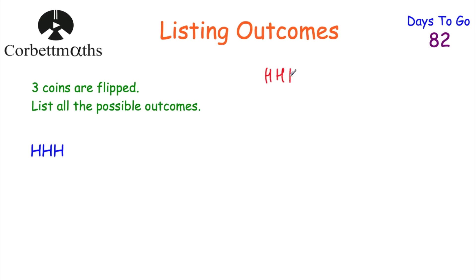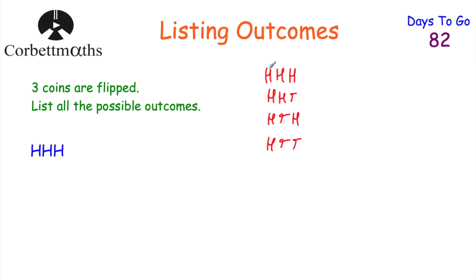So we've got head, head, head. Keeping the first coin as heads, the other possible outcomes are: head, head, tail; head, tail, head; and head, tail, tail. Those are the four combinations where the first coin is a head, because the second and third coins can be head-head, head-tail, tail-head, or tail-tail.